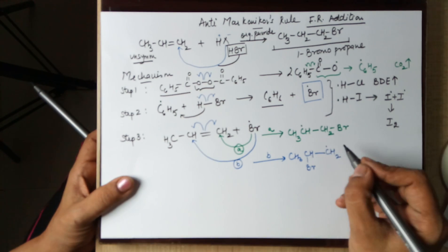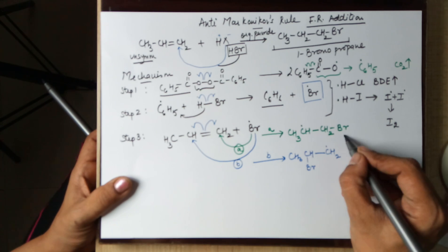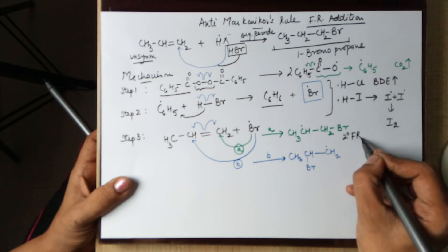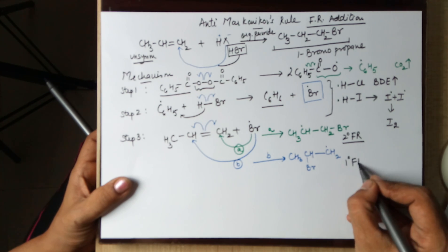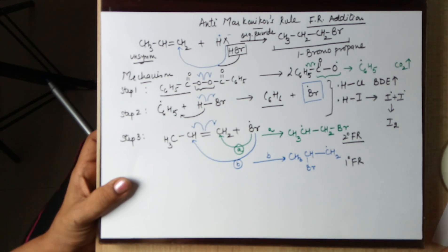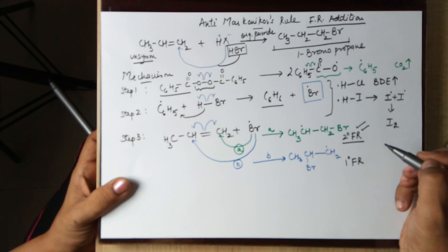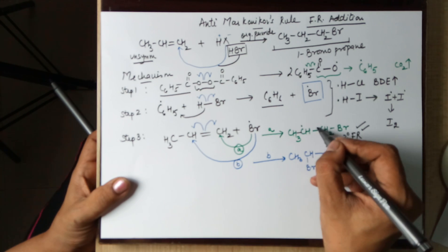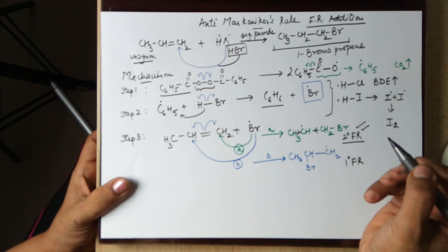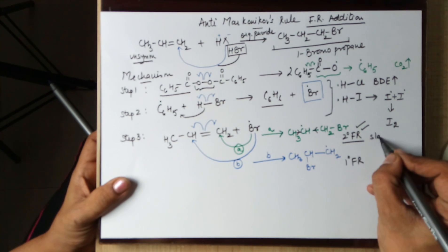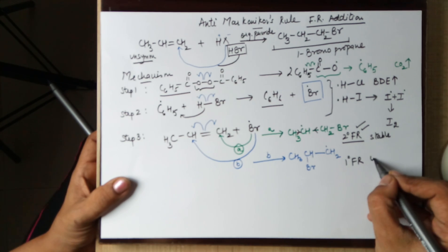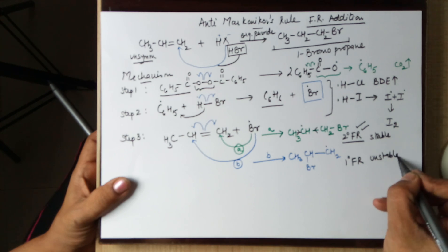Out of these two, this particular one is a 2 degree free radical, while this is a 1 degree free radical. And we very well know, this is the reaction which will continue, because 2 degree free radical is more stable. Reason being, these two methyl groups stabilize the 2 degree free radical, while this is a stable free radical, and this is an unstable free radical.